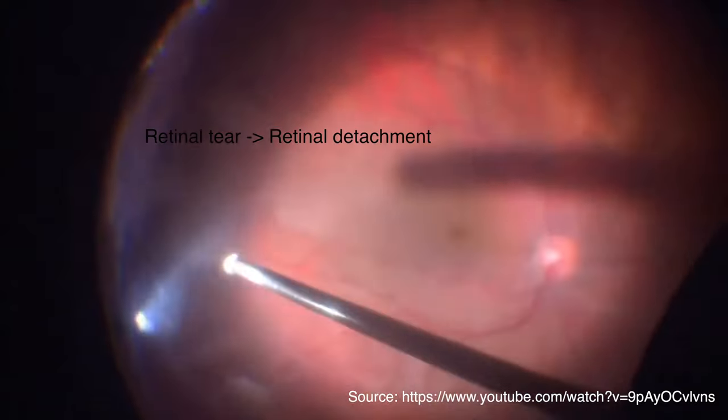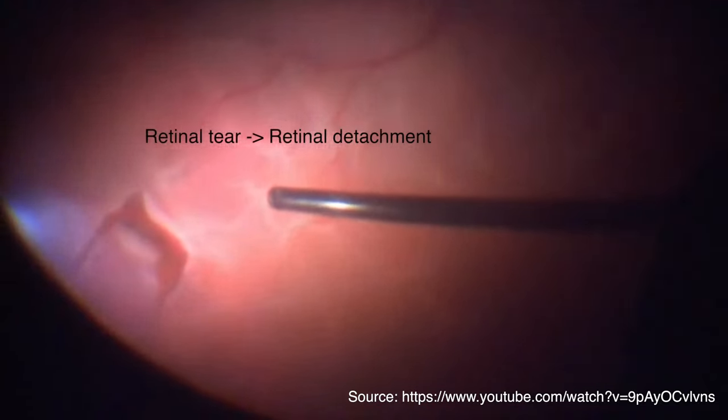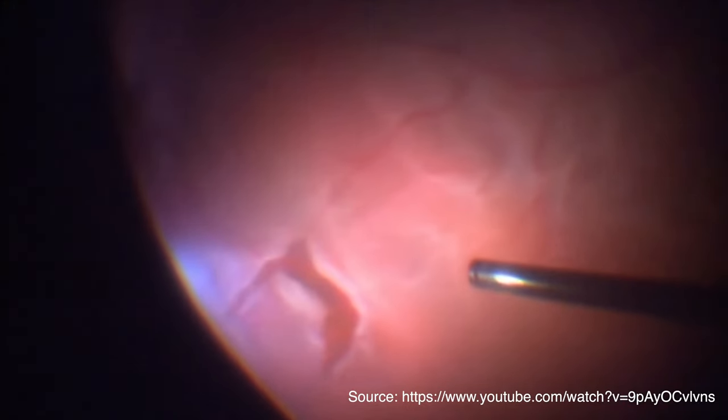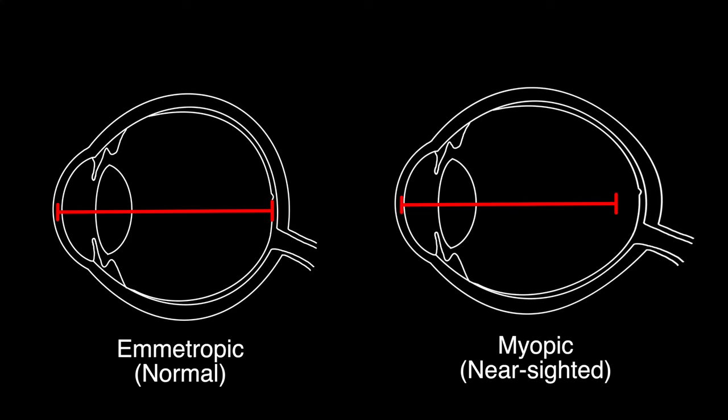An optometrist's worst nightmare would be a retinal detachment, when the retina starts peeling off of the eye. Those that are myopic, or near-sighted, are more prone to such catastrophes, so the smart approach is to delay myopia as much as possible, until the prescription stabilizes during the mid to late twenties. Be on the lookout for symptoms of retinal breaks in the form of new floaters suddenly appearing, and flashes of light randomly shining in the periphery.